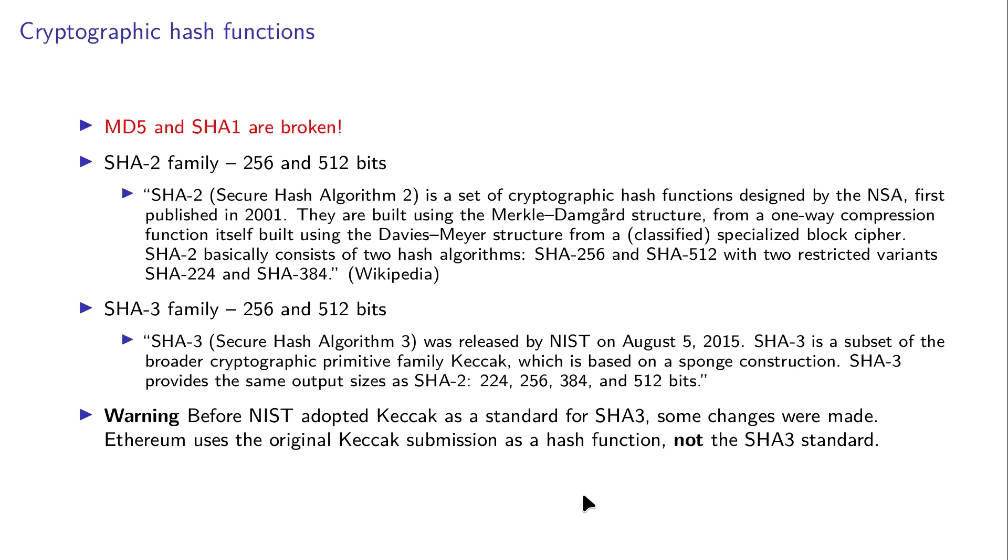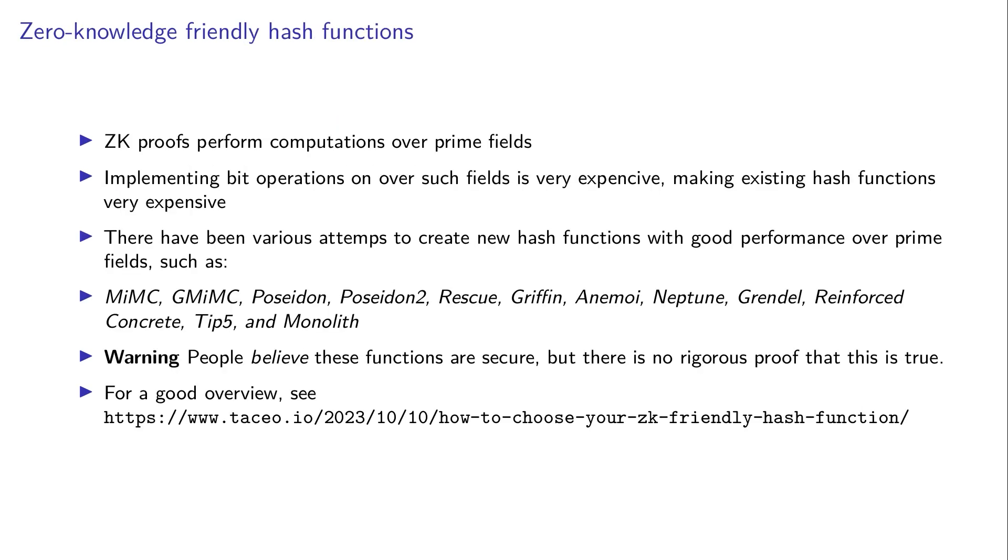In the case of zero knowledge protocols that we will discuss later on in this course, the problem is that zero knowledge proofs perform computation over finite fields, but implementing bit operations over such finite fields is very expensive. Operations like doing a shift or doing an exclusive or, ANDs and ORs, they are expensive.